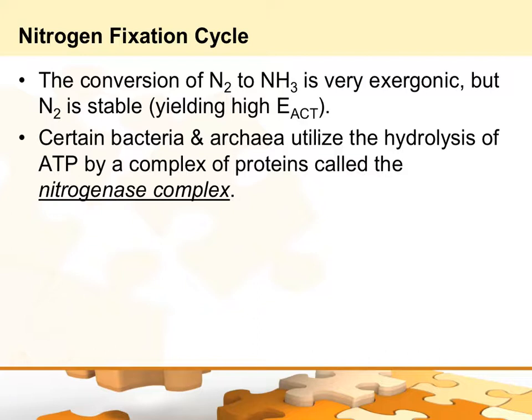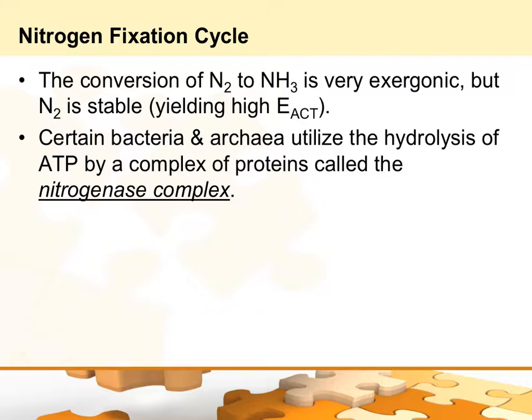The nitrogen fixation cycle converts elemental nitrogen to ammonia. It's very exergonic, if you think back to general chemistry. One of the problems is the fact that nitrogen is so stable — that's one reason why, whenever you're working with things that react with oxygen, they have you pipe in nitrogen gas on top of it, because nitrogen is inert. They'll also use argon. Certain bacteria and archaea can hydrolyze ATP using something called the nitrogenase complex.